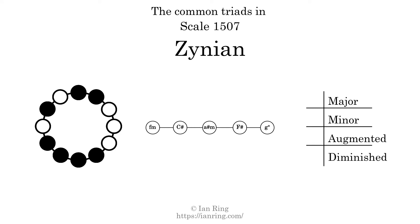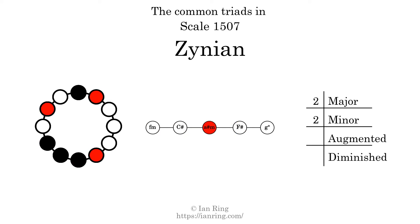Here are the common triads present in this scale. The diagram in the center is a graph of parsimonious voice leading between triads. There are two major triads, two minor triads, no augmented triads, and one diminished triad. Here is a Hamiltonian path of parsimonious voice leading that uses all the triads.